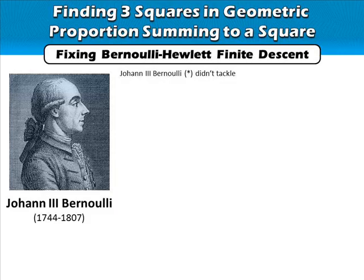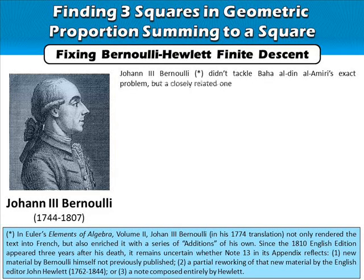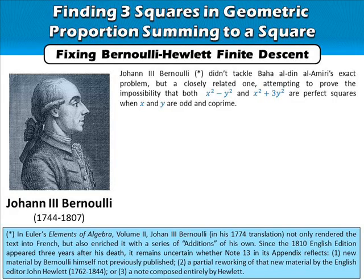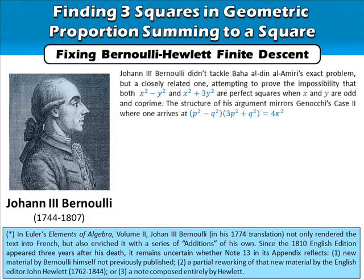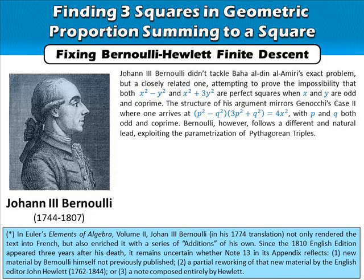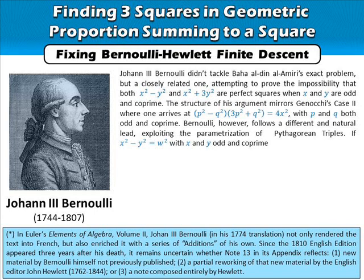Johan III Bernoulli didn't tackle Baha al-Din al-Amiri's exact problem, but a closely related one: attempting to prove the impossibility that both x² - y² and x² + 3y² are perfect squares when x and y are odd and coprime. The structure of his argument mirrors Genocchi's Case 2, where one arrives at (p² - q²)(3p² + q²) = 4x², with p and q both odd and coprime. Bernoulli, however, followed a different and natural lead, exploiting the parametrization of Pythagorean triples. If x² - y² = w² with x and y odd and coprime, then necessarily x = a² + b² and y = a² - b².